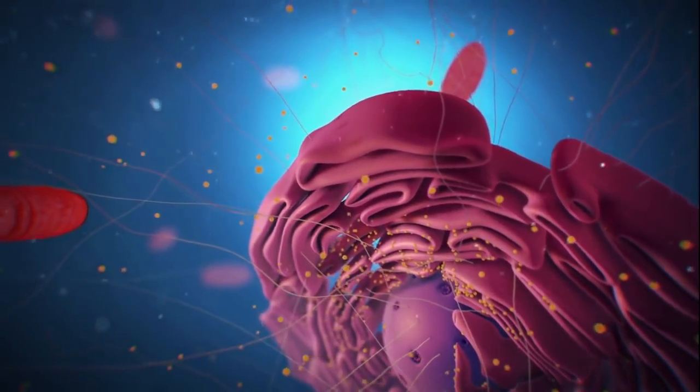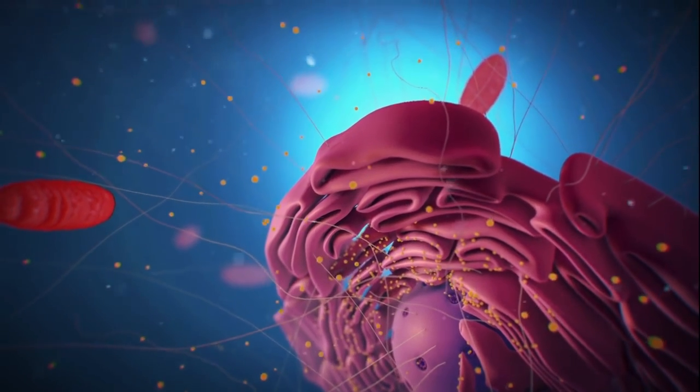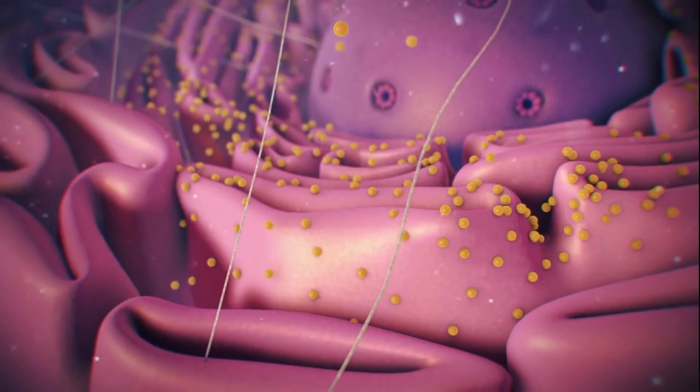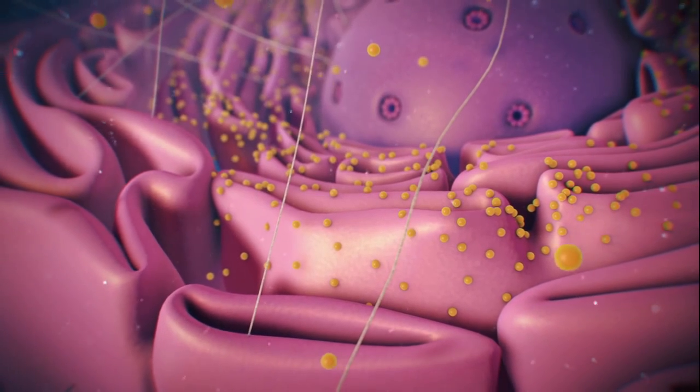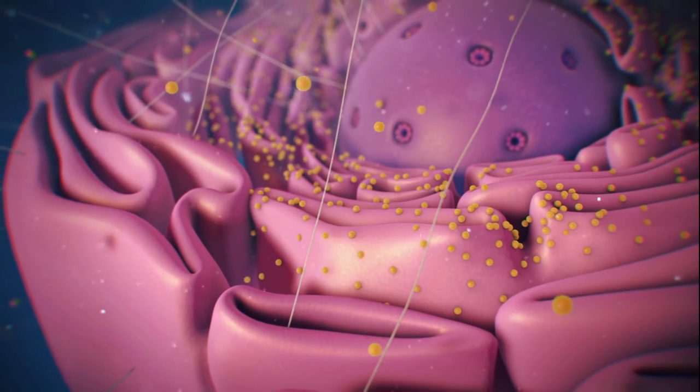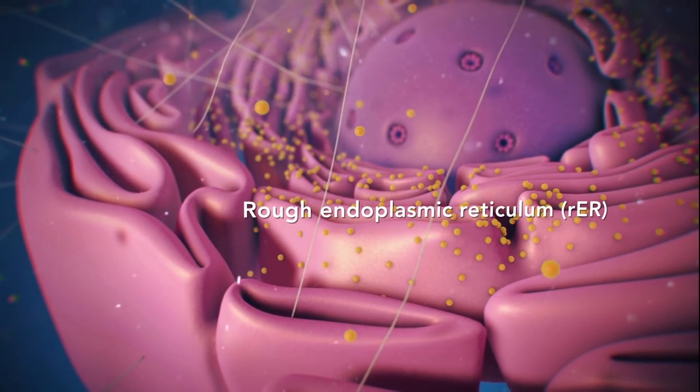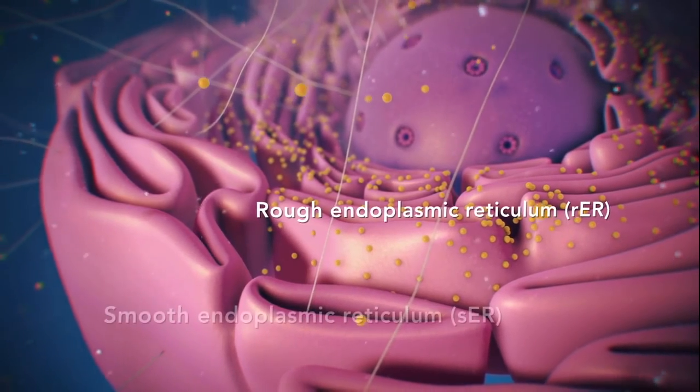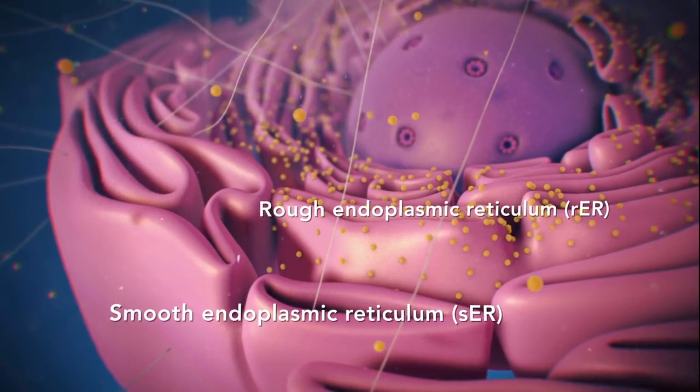Ribosomes may wander freely within the cytoplasm or attach to the endoplasmic reticulum, sometimes abbreviated as ER. There are two types of ER. Rough ER has ribosomes attached to it, and smooth ER doesn't have ribosomes attached to it.